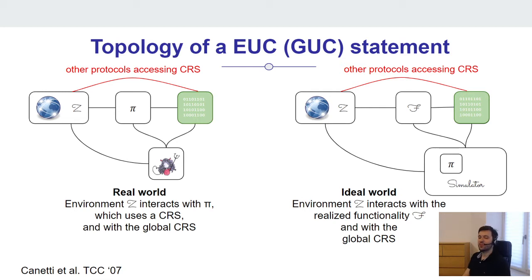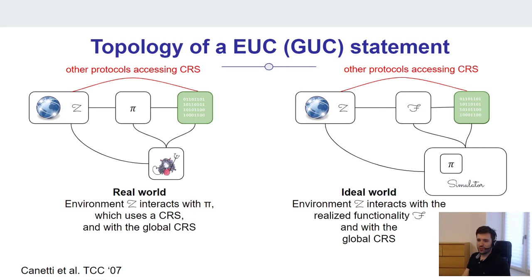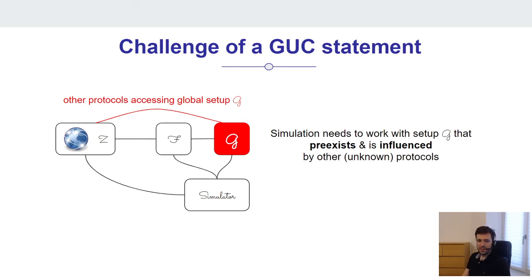In a nutshell, externalized UC now allows access to the CRS by the environment and hence also by any other protocol running in the world. The notion is similar — you must be indistinguishable from an ideal world — but the simulation task becomes substantially harder. The simulator must cope with the CRS as is; he cannot program it. The CRS might even pre-exist before the protocol session started. So the challenge of a GUC or EUC statement is that the simulation needs to deal with the setup as it's defined, without implanting anything a priori. And even worse, this global subroutine might be influenced by the environment directly and its state might be changing, which is not under the control of the simulator.